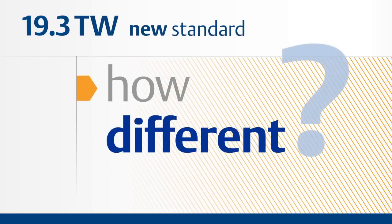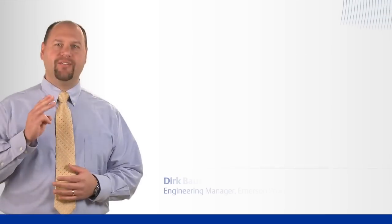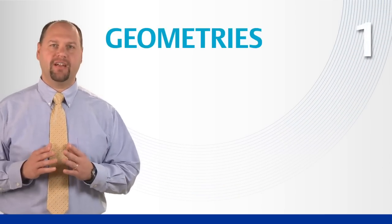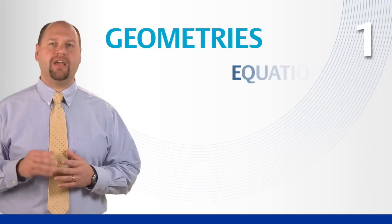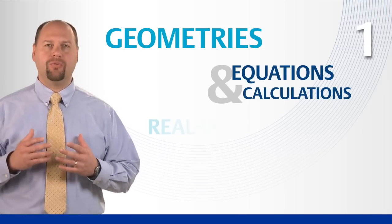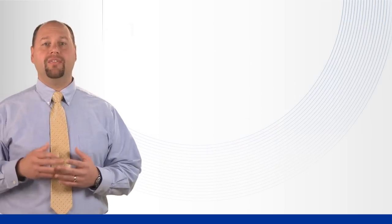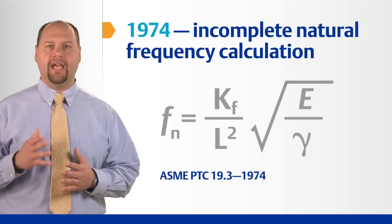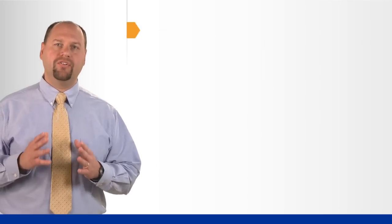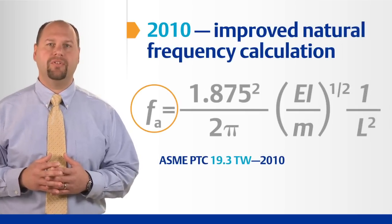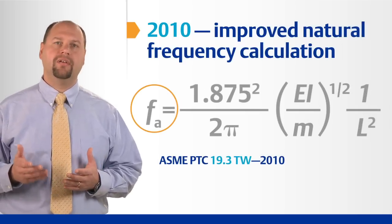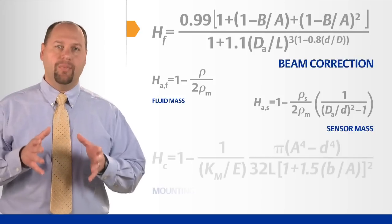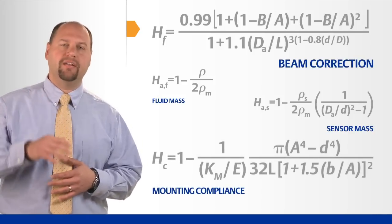So how is the new standard different? There are three key differences. First, the new standard includes stem profiles previously not covered, and more accurate natural frequency equations that reflect the real-world effects resulting from installation. The ideal or theoretical natural frequency is corrected for the effects of adding a sensor and the mounting style. This lowers the effective natural frequency that is compared to the shedding frequency. Many factors such as beam correction, fluid mass, sensor mass, and mounting compliance are calculated and applied to the natural frequency.